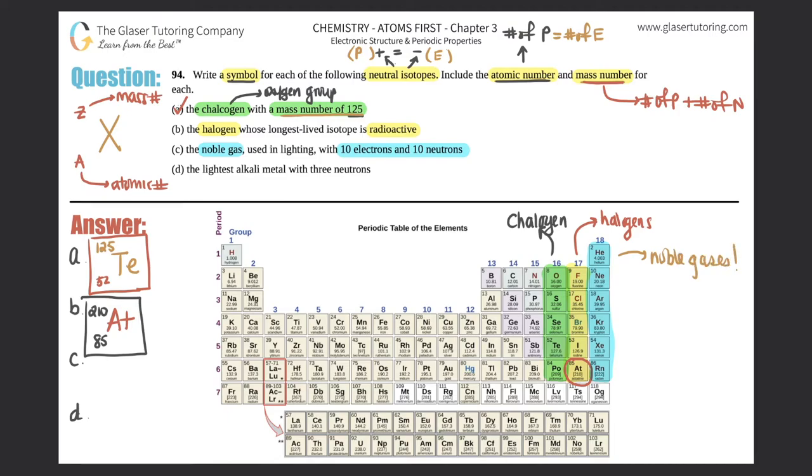They don't tell us the atomic number, but remember the atomic number is equal to the number of protons, which equals the number of electrons because it's neutral. They told us over here that all these are neutral, so 10 electrons equals 10 protons. Now I scan my noble gases and it looks like 10 is right here.